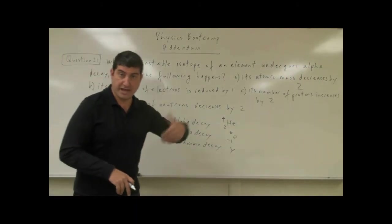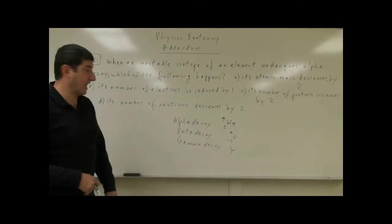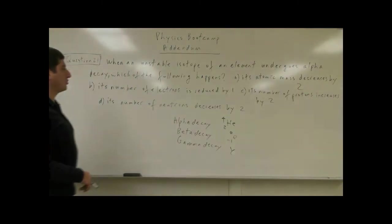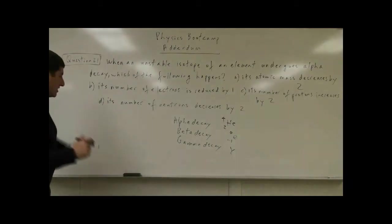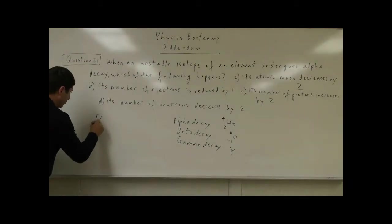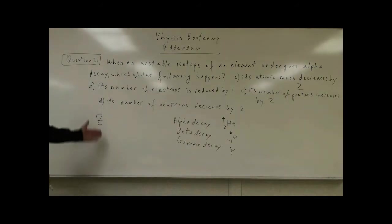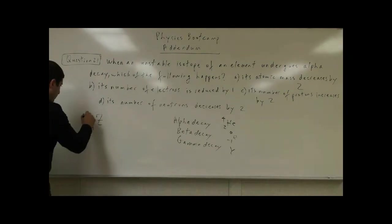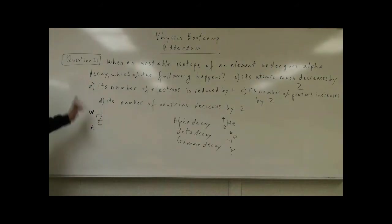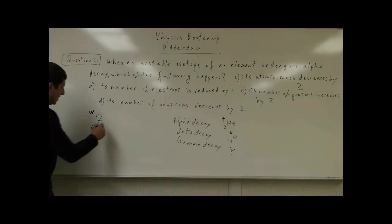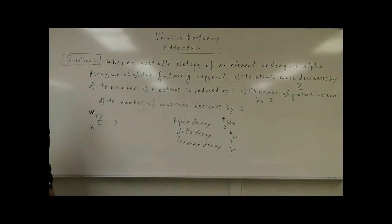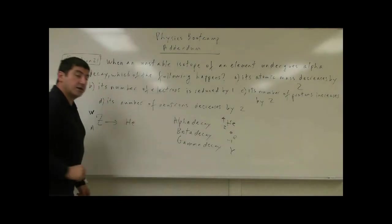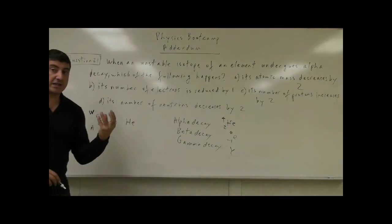In this case we are concerned about alpha decay. The equation for alpha decay can be written like this: if you have an original isotope — let's say the isotope is named Z, with atomic number A and atomic weight W — if this undergoes alpha decay, it's going to release the nucleus of a helium atom.